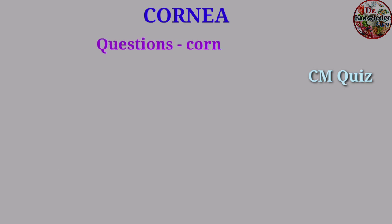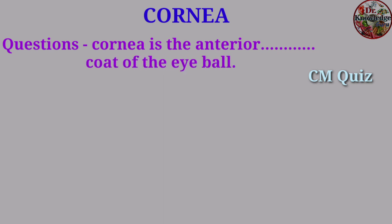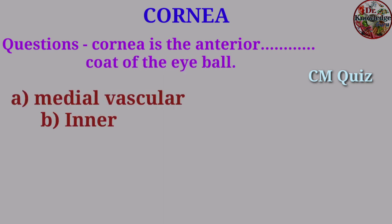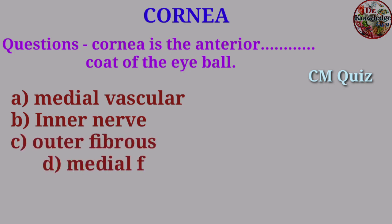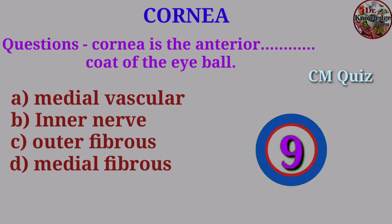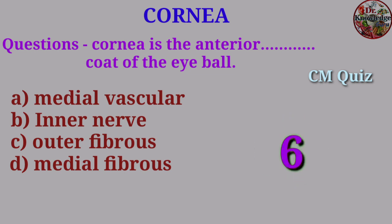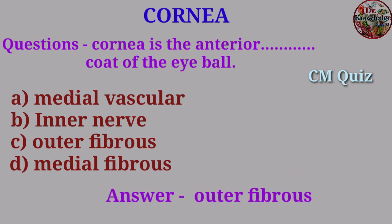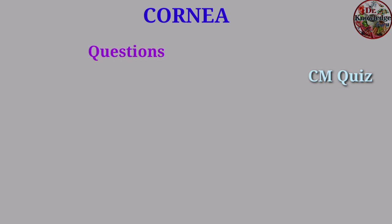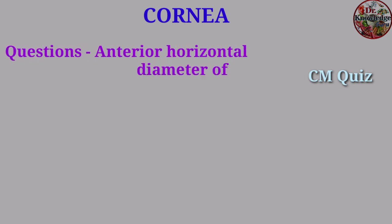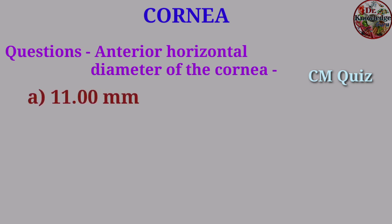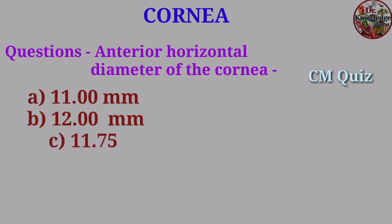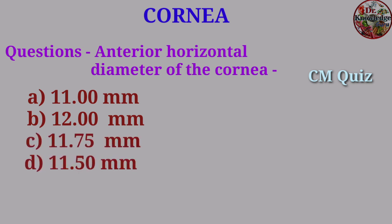Question: Cornea is the anterior coat of the eyeball — A. Medial vascular, B. Inner nerves, C. Outer fibrous, D. Medial fibrous. Answer: Outer fibrous. Question: Anterior horizontal diameter of the cornea — A. 11.00 mm, B. 12.00 mm, C. 11.75 mm, D. 11.50 mm.